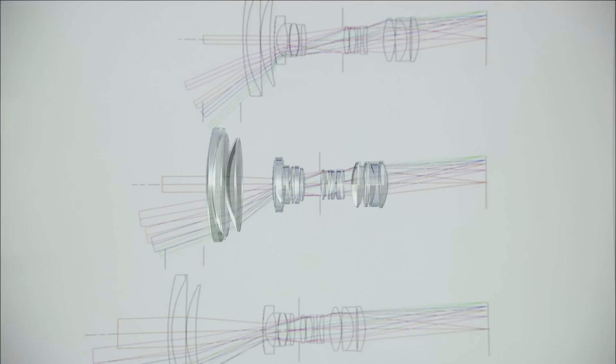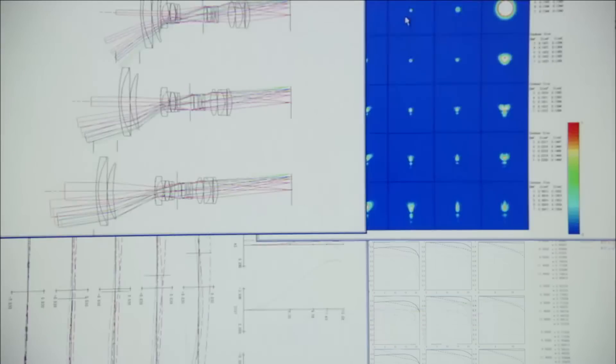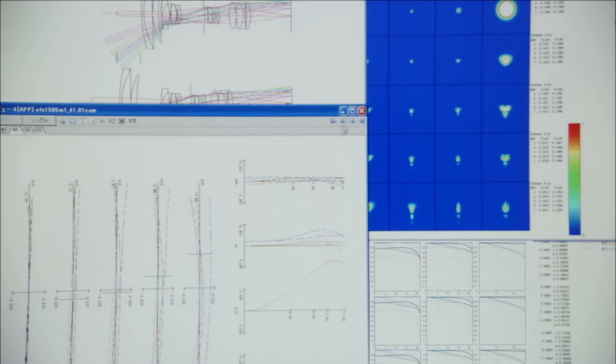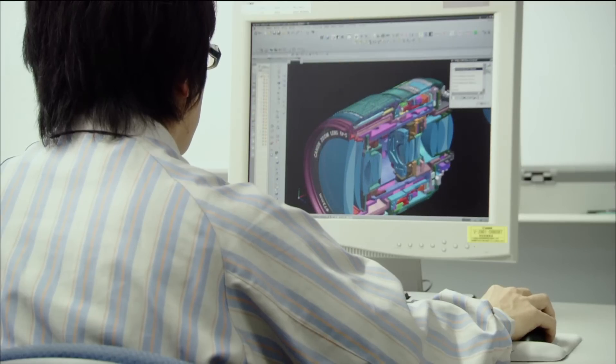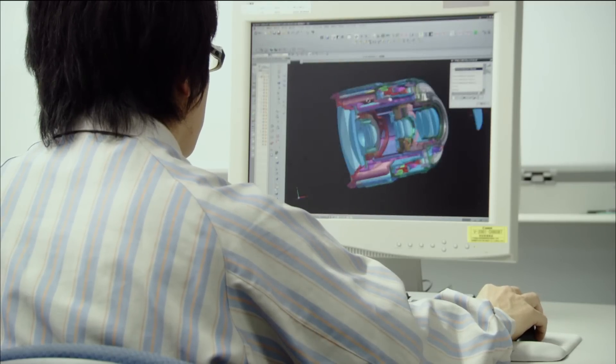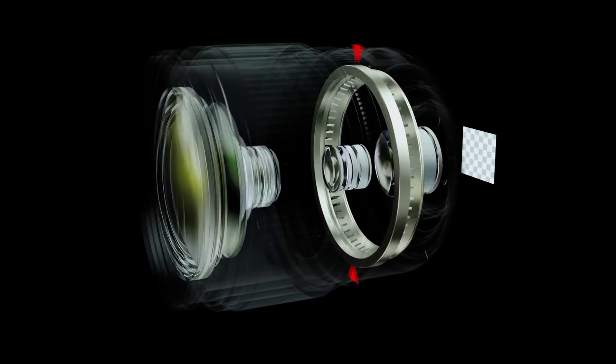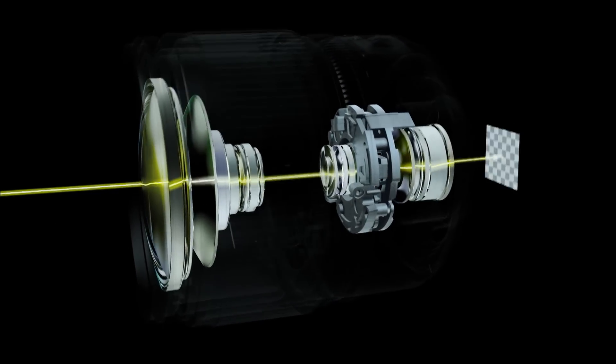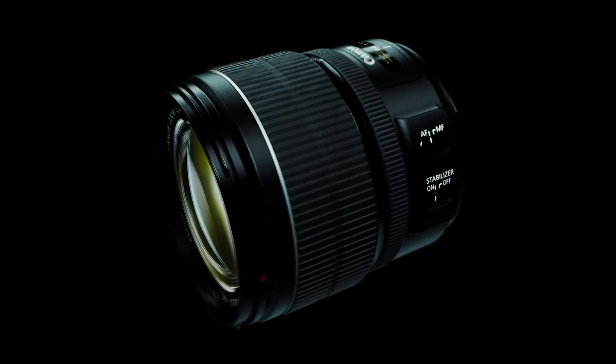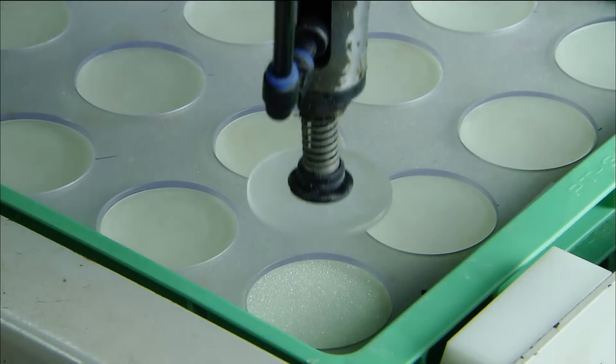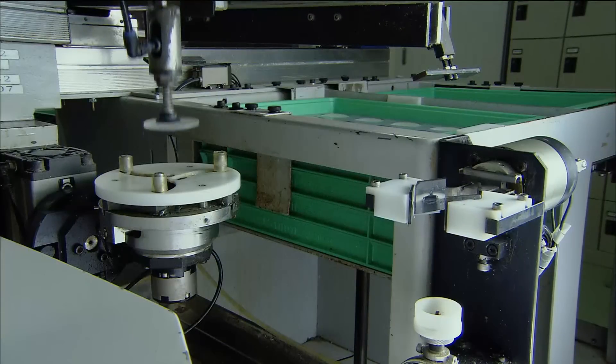Lens design employs computers that perform countless simulations, combining various lens shapes, sizes, arrangements, and materials. Lenses also incorporate the latest technologies, such as ultrasonic motors and image stabilization that corrects for camera shake. Lenses are created by polishing glass.